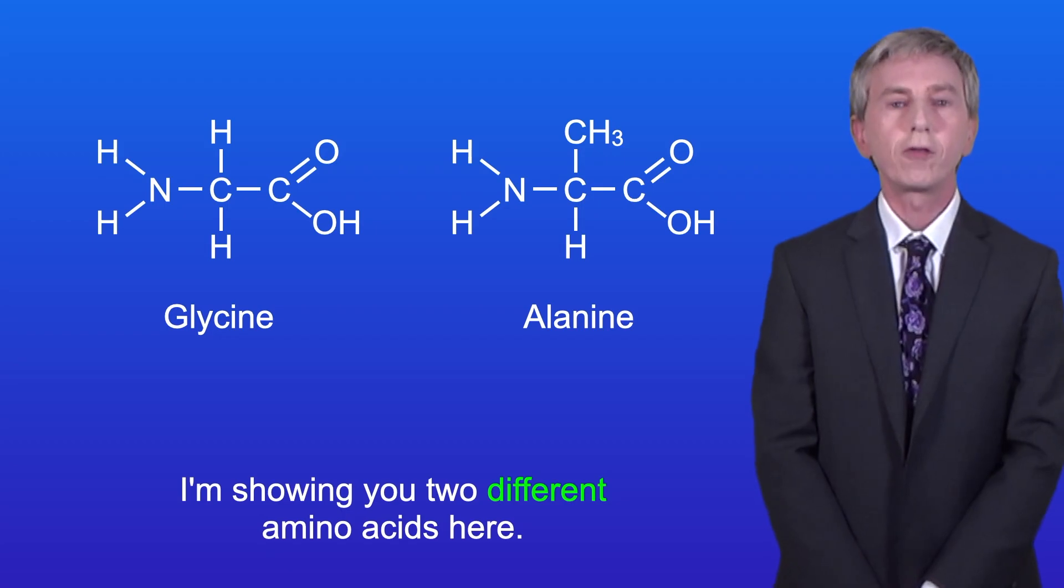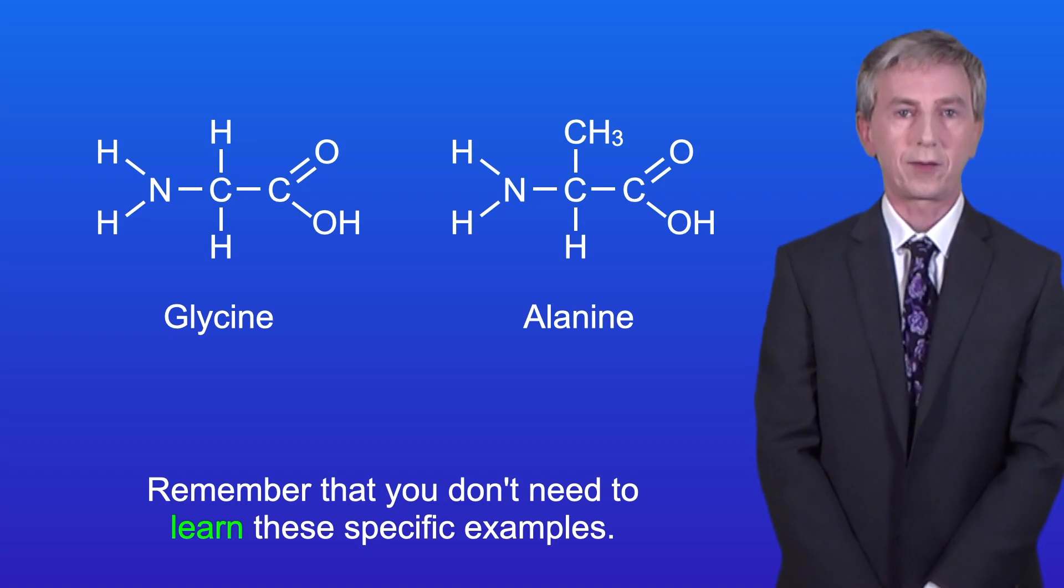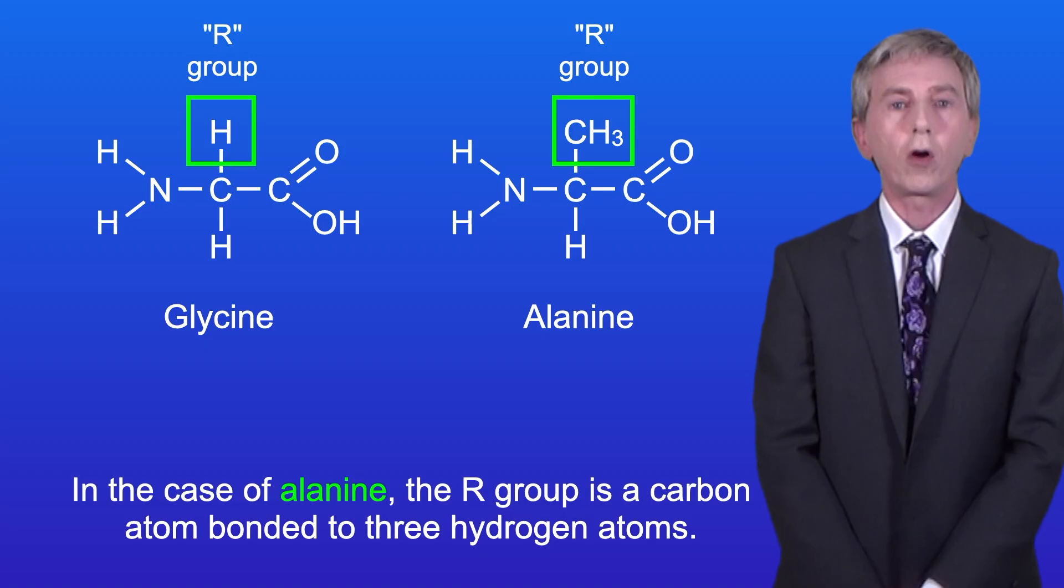I'm showing you two different amino acids here, and remember that you don't need to learn these specific examples. In the case of glycine the R group is a hydrogen atom, and in the case of alanine the R group is a carbon atom bonded to three hydrogen atoms.